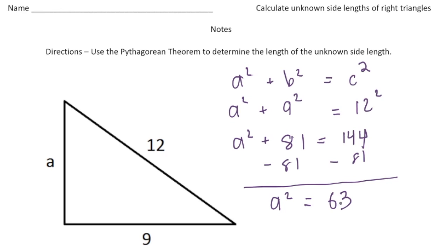So that now leaves us with a squared equals 63. And now to figure out the value of a I'm going to square root both sides. So a is going to equal the square root of 63.